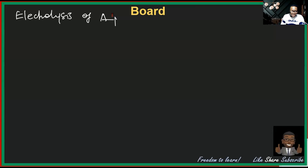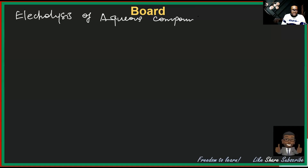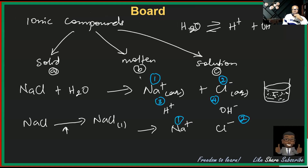Electrolysis of an aqueous compound — we have established earlier what aqueous means: it means you have a solution formed. Water is present. And when you have electrolysis of an aqueous compound, you are going to have four ions.